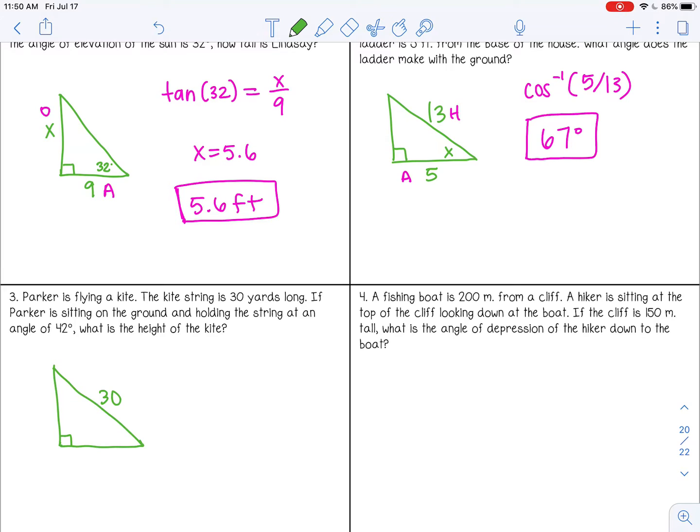If Parker is sitting on the ground and holding the string at an angle of 42 degrees, what is the height? So here's Parker down here. So the angle would be 42 degrees. And height is always vertical. You measure height straight up in the air. So that would be our x.